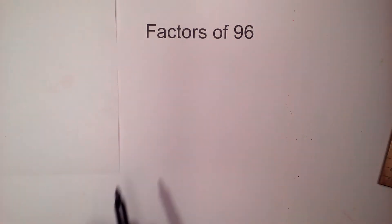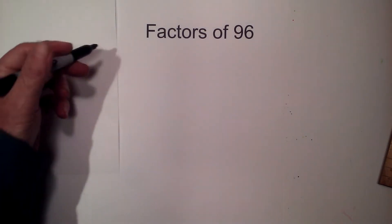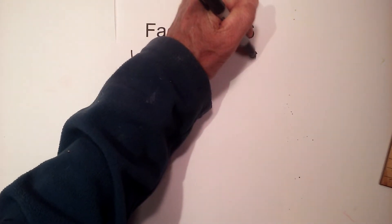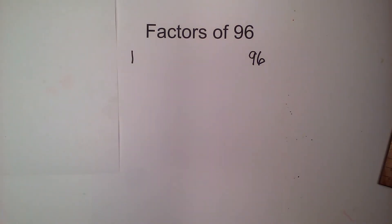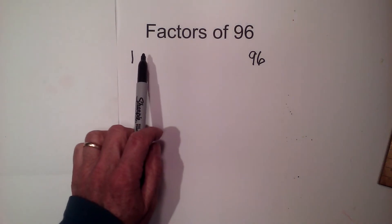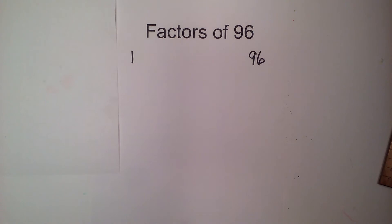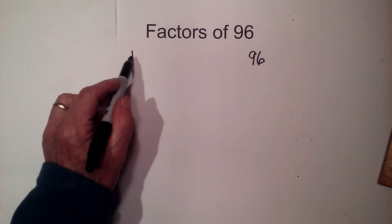In this video let's find all the factors of 96. 96 is a composite number, so numbers other than one and itself should divide into it. Here's how I find factors: I'm going to write 1 here and 96 over here, because 1 times 96 equals 96. Now I find all the numbers that multiply together between 1 and 96, and as I close the gap, that's how I'll find all the factors.